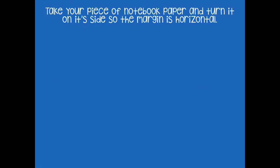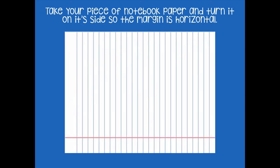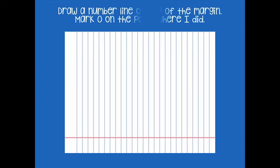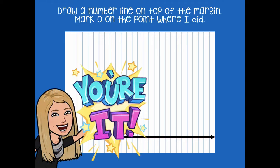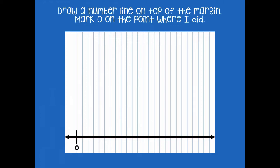Take your piece of notebook paper and turn it on its side so the margin is horizontal — just like this. That red line is your margin. We're going to draw a number line on top of the margin and mark zero at the end point. Do not label one yet — we'll get to that later. Pause the video, draw your number line with zero at the end, and then click play when you're ready for the next step.